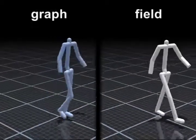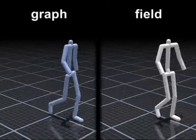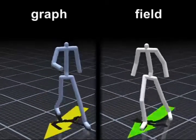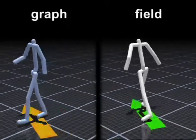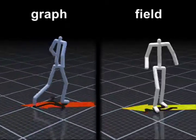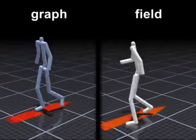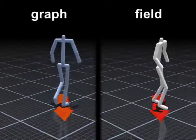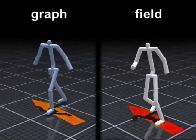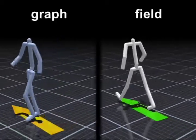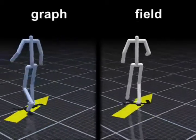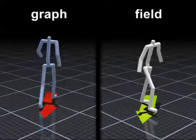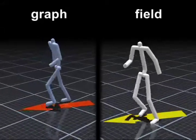Here are two controllers built from the same underlying data. The character animated using a motion field can change direction in a very agile manner, while the graph-based controller is substantially slower to respond.